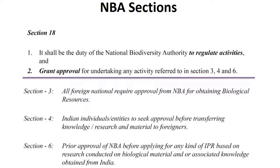Section 18 states it shall be the duty of the National Biodiversity Authority to regulate activities and grant approval for undertaking activities referred to in Sections 3, 4 and 6. Section 3 states all foreign nationals require approval from the NBA for obtaining biological resources. Section 4 requires Indian individuals or entities to seek approval before transferring knowledge, research or material to foreigners. Section 6 requires prior approval of the NBA before applying for any IPR based on research conducted on biological material or associated knowledge obtained from India.